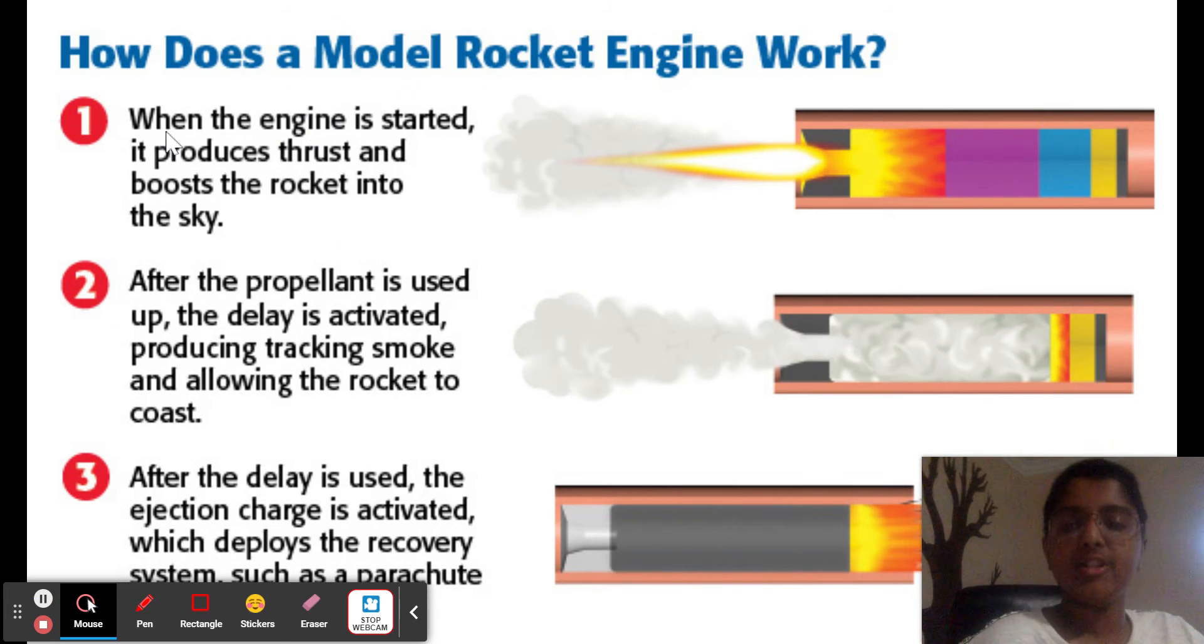When the engine is started it produces thrust, like the booster. And this is all the propellant. This is extremely reactive fuel, and this is less reactive. It's kind of like this has more power than this. And after the propellant is used, the delay is activated. So basically, after the delay is activated, to cool down the engine, it just gives off smoke. And what smoke does is basically just close down the enclosure of the rocket.